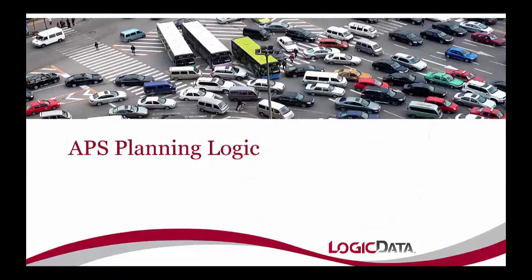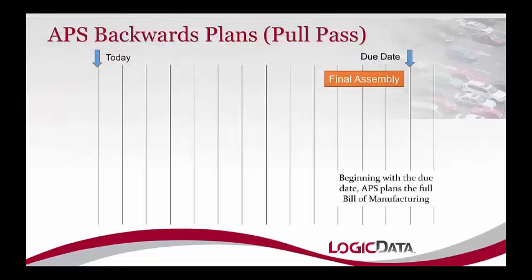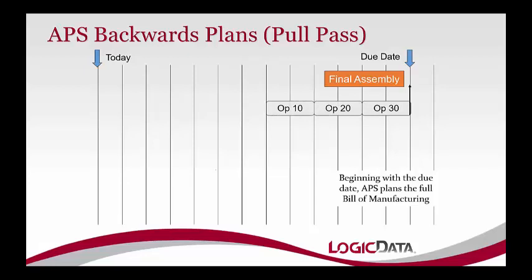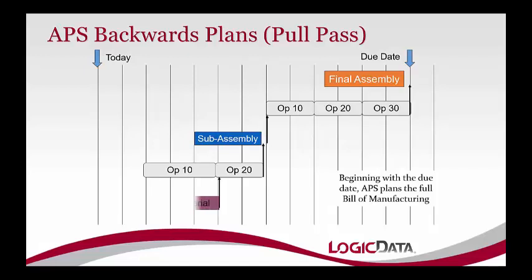Let's look at how APS actually thinks. Assume we have a customer order with a due date, and a final assembly to manufacture with a routing — operations 10, 20, and 30, each taking two days. APS backwards plans the routing and determines when it needs to start. It then looks at the bill of material, sees when the subassembly must be available, plans its routing, and identifies the materials needed with their lead times. APS sees that we can start today, order the first material, and successfully complete everything in time for the customer due date.